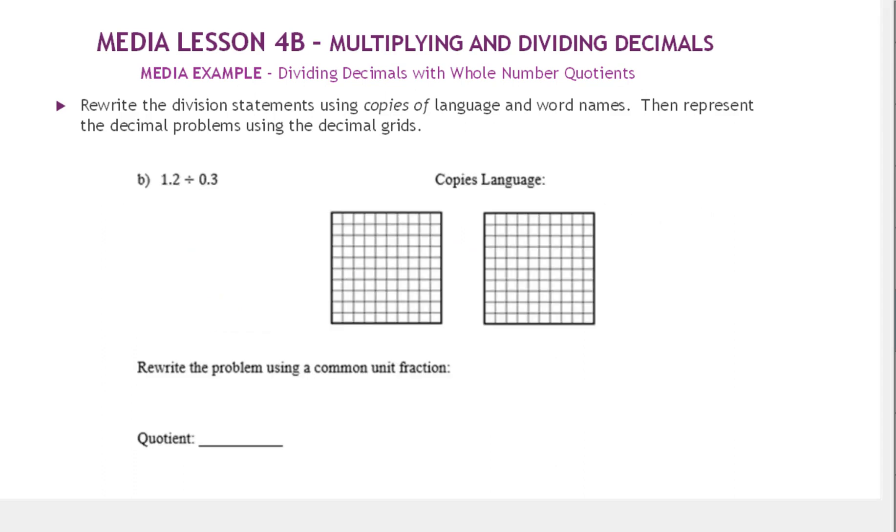Now we're going to look at an example that has decimals. So here we have 1.2 divided by 0.3, or 1 and 2 tenths divided by 3 tenths. So let's write this in copies language. How many copies of 3 tenths are in 1 and 2 tenths?